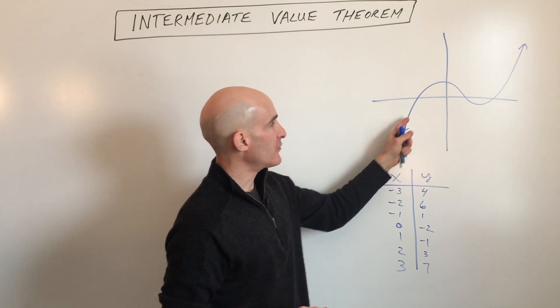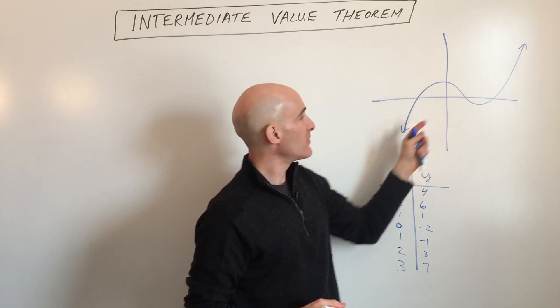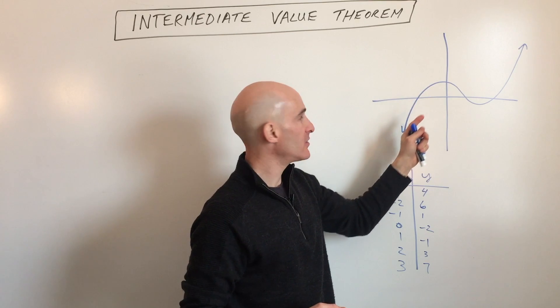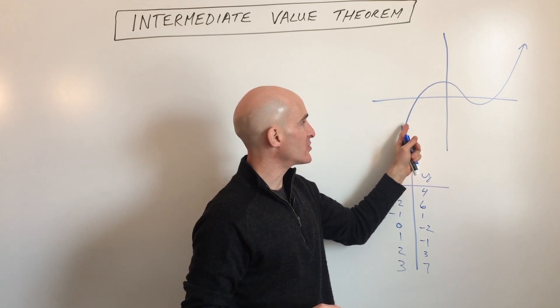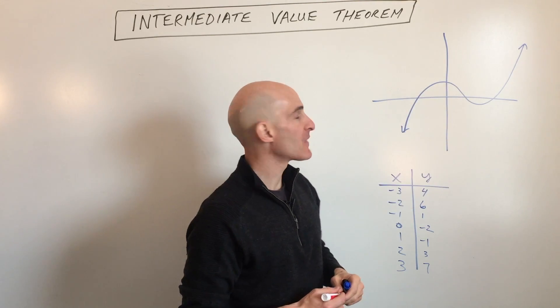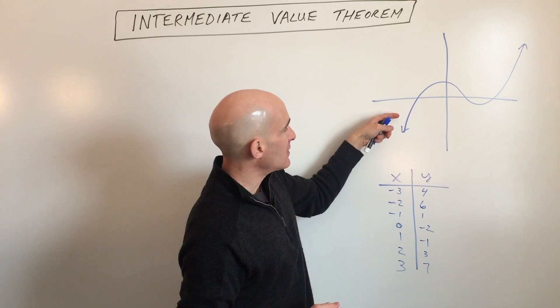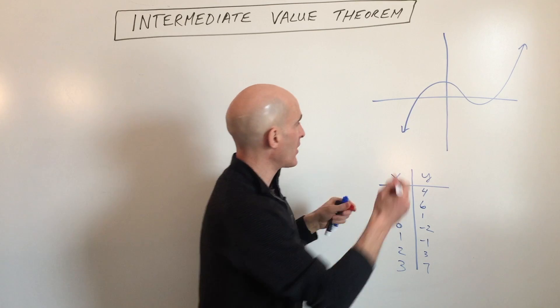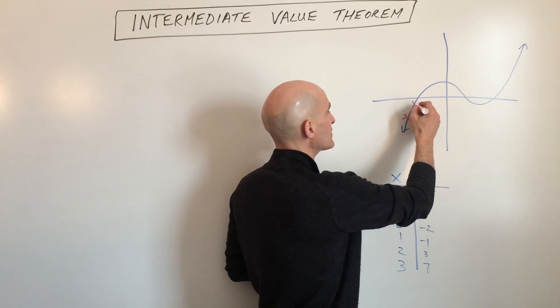The Intermediate Value Theorem tells you that if you have a continuous graph, meaning you're not picking up your pen, there's no breaks in the graph. It's like you can drag your pencil or pen along the graph without picking it up. So if you go from this point right here to this point right here...